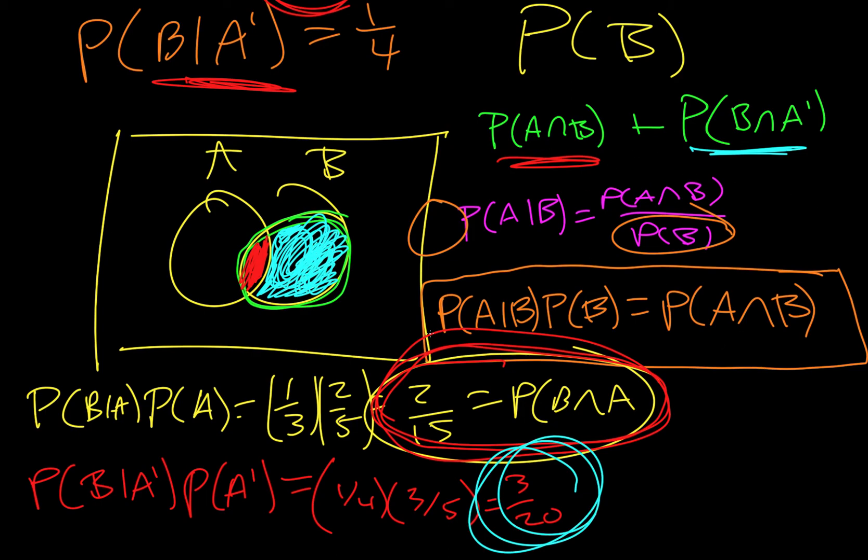Now we just need to add those two answers together. So we have 2/15 plus 3/20, and so we need to get common denominators. We want to turn those both into 60, so this one's going to be 4 over 4, this one's going to be 3 over 3.